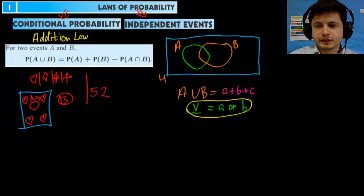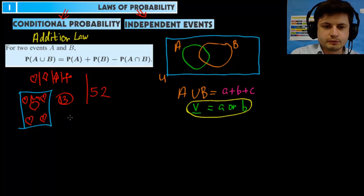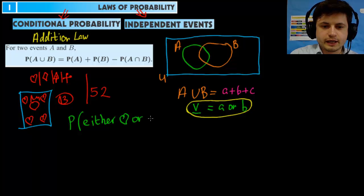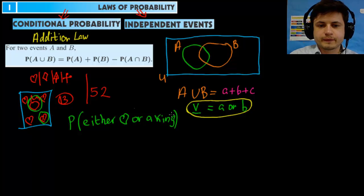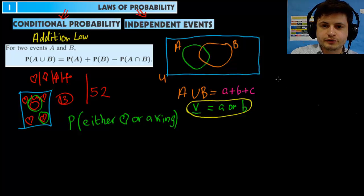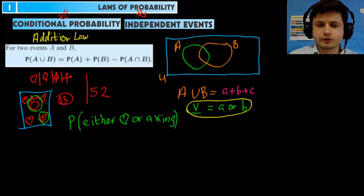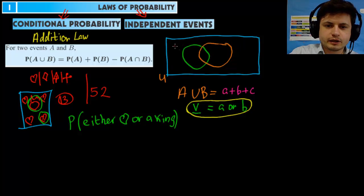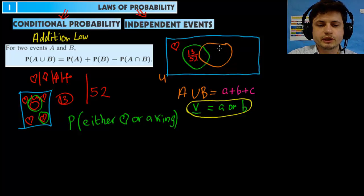Let's look at this example: we want to find the probability of getting either a heart or a king. Using a Venn diagram, we'd look at the combination of all three areas. What is the probability of getting a heart? There are 13 different cards with a heart, so that gives us 13 out of 52.